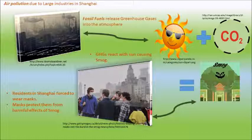Air quality in Shanghai is the main concern of environmental issues. As a result of the large amount of industries which use coal in Shanghai, air pollution occurs. Fossil fuels from these coal-generating industries release greenhouse gases into the atmosphere, causing them to react with the heat from the sun, and this results in the formation of smog. The citizens of Shanghai are then forced to wear masks to protect themselves from these harmful effects.